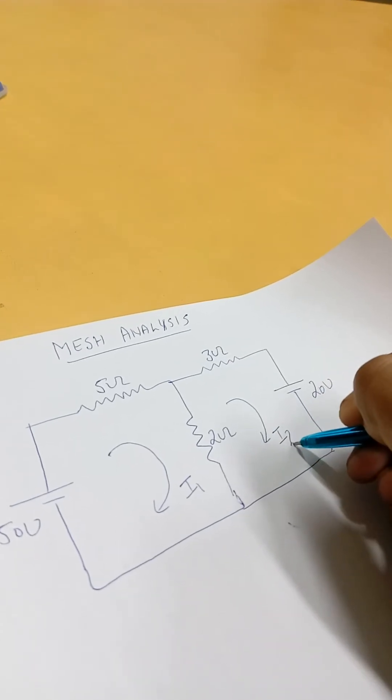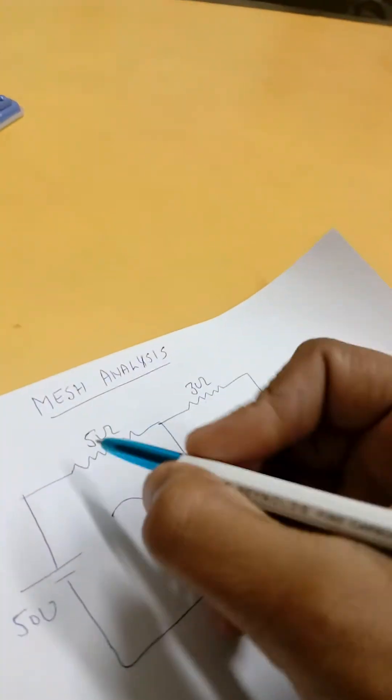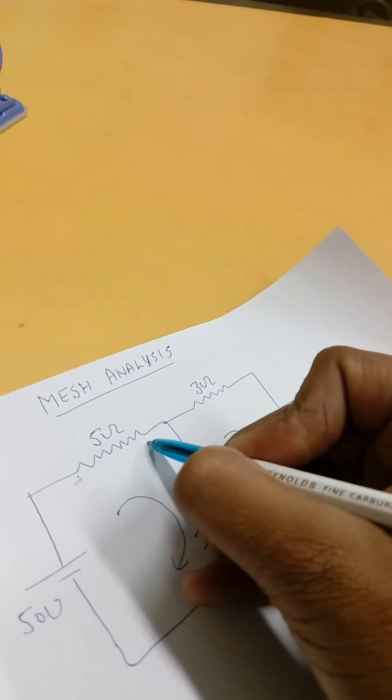Now assign the polarities to each of the resistors like this.